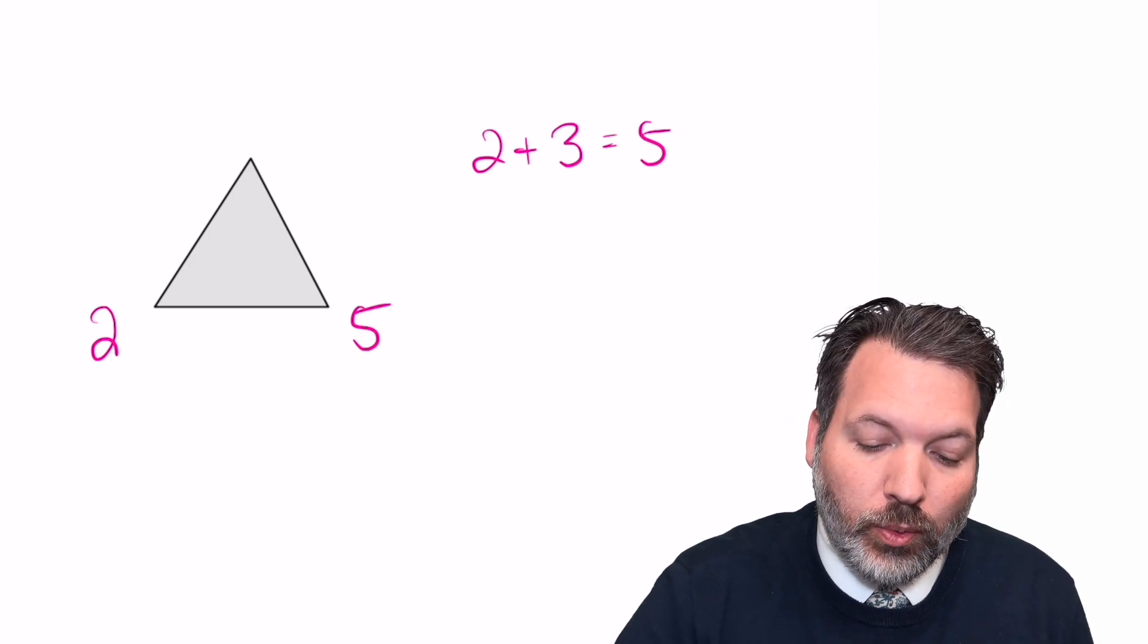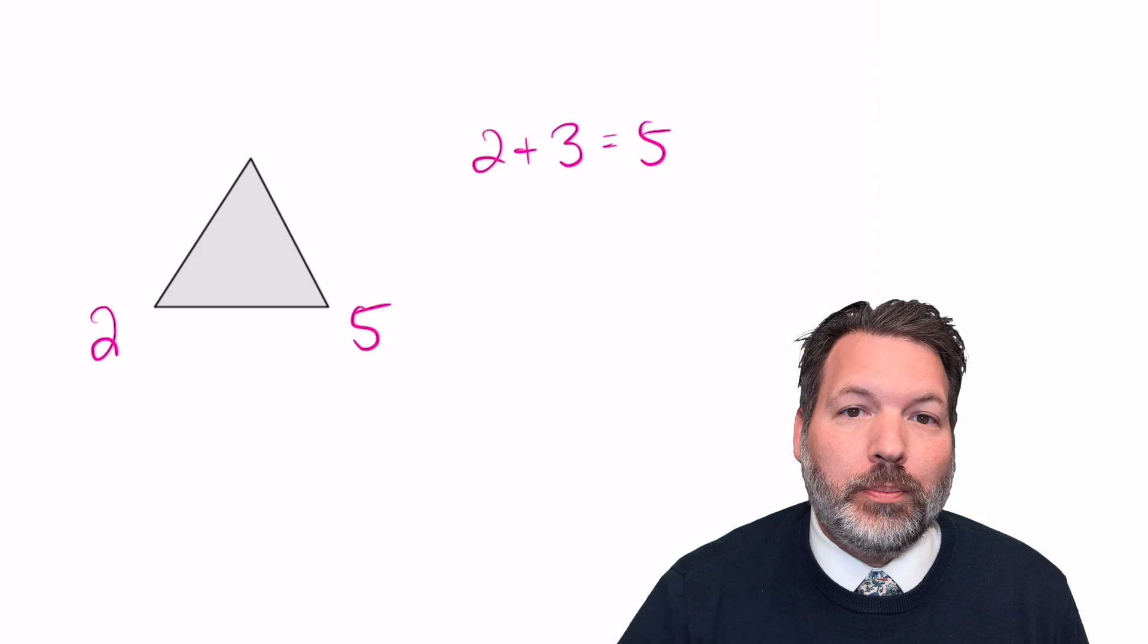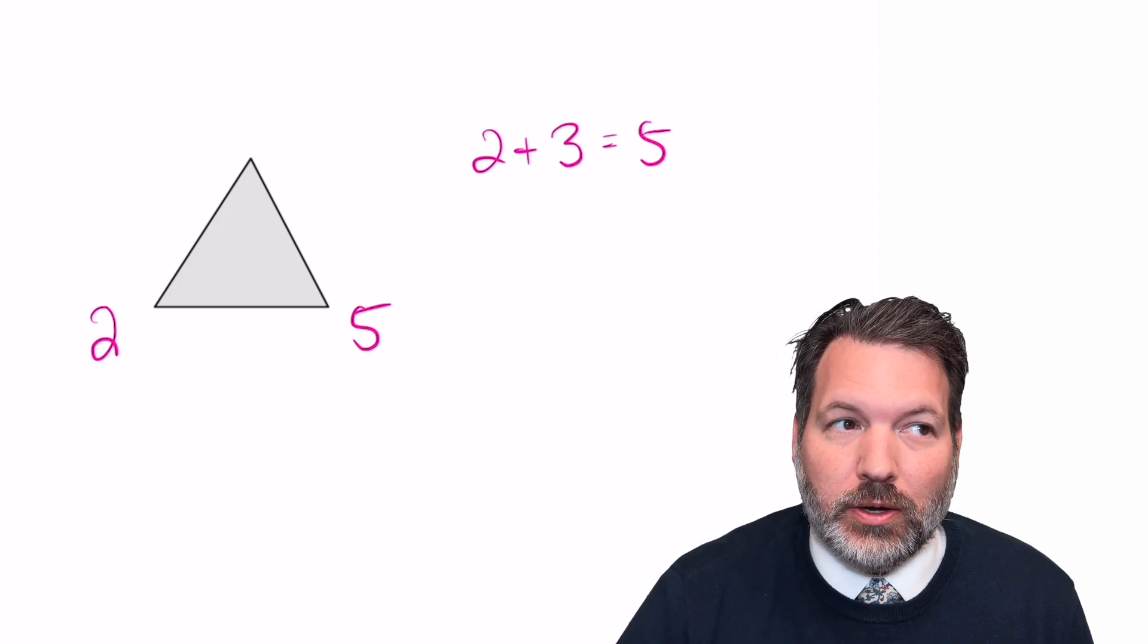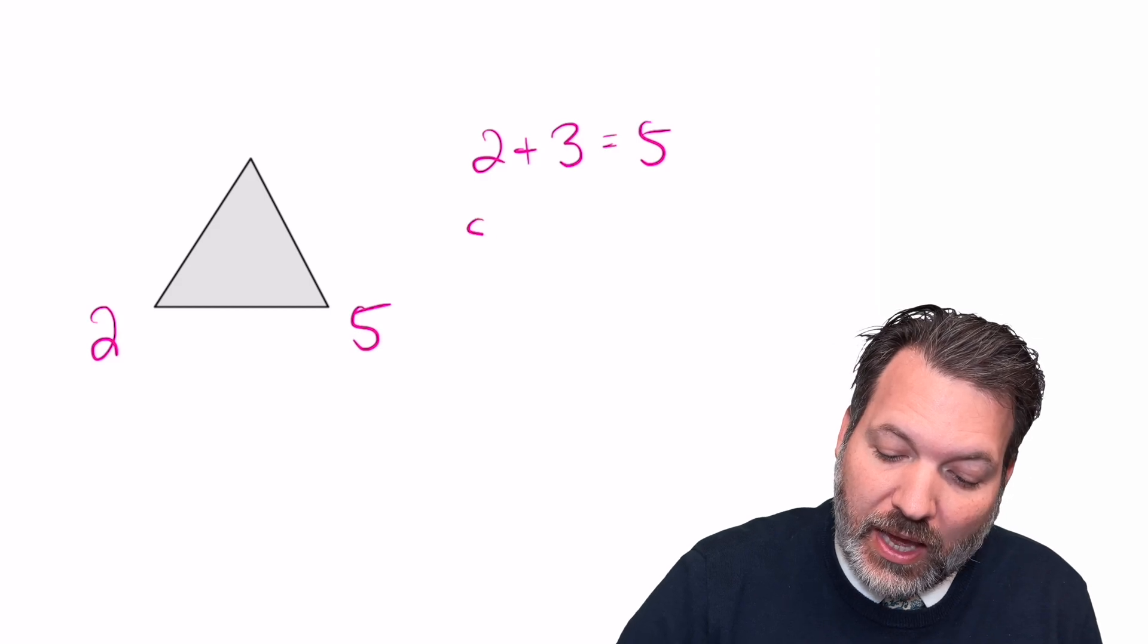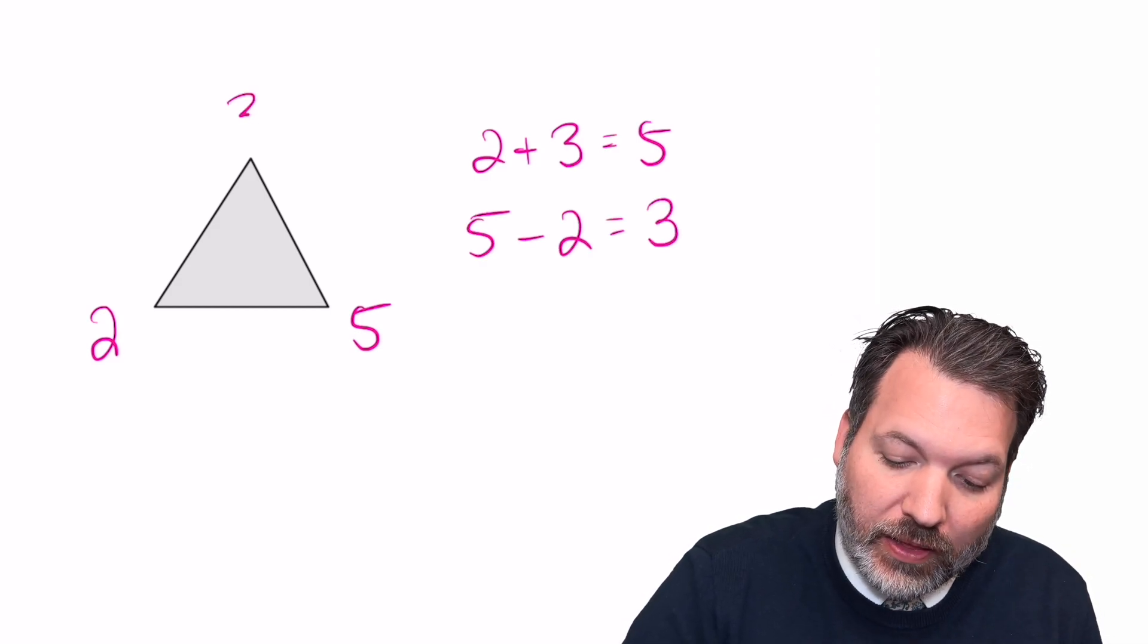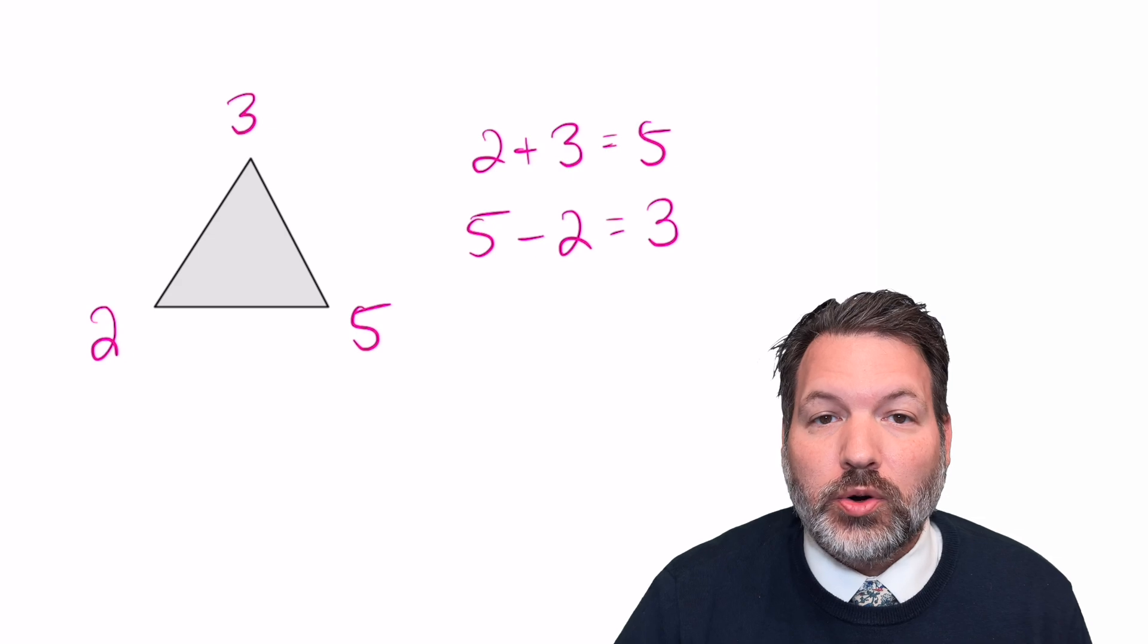If we didn't know one of the corners of the triangle, if we didn't know the 3, for example, we could still generate that information by using subtraction instead. So this is one of the other facts that's a part of our fact family. We can say that 5 minus 2 is 3, and in that way we could recover this missing corner.